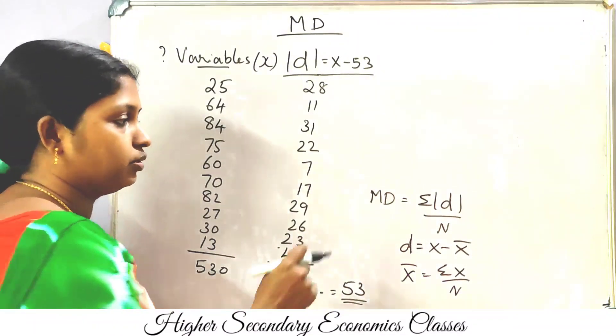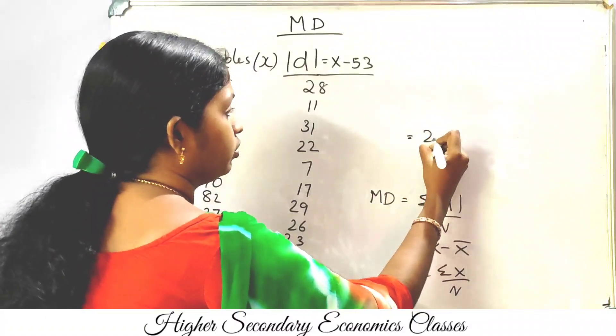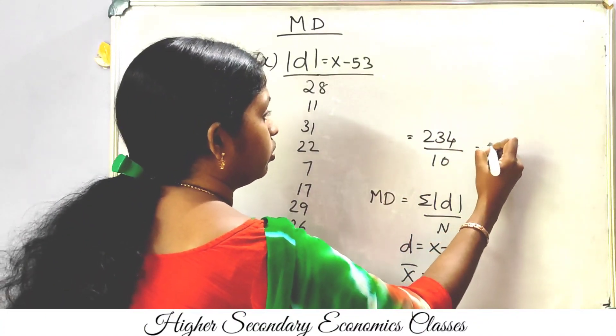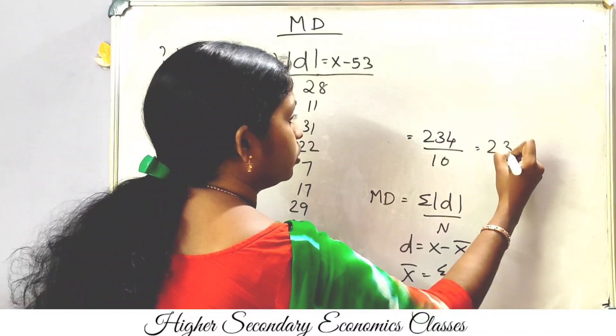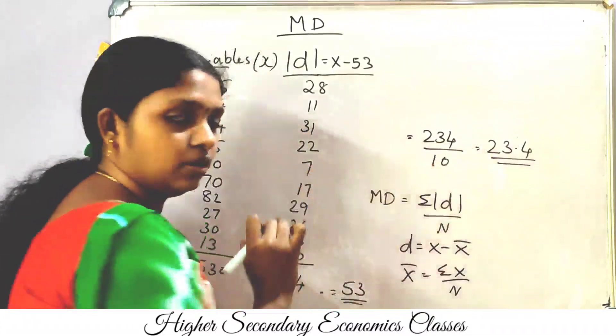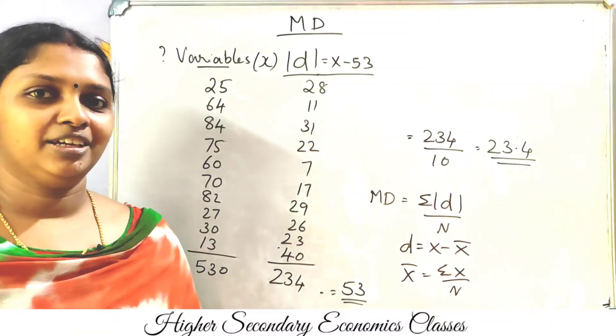The mean deviation equals 2034 divided by 10, which is equal to 23.4. The answer is straightforward. This is the individual series example completed.